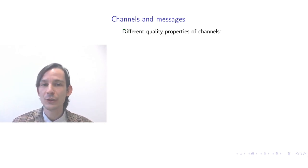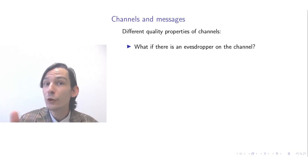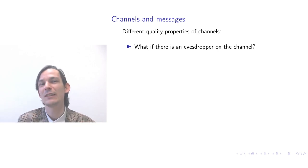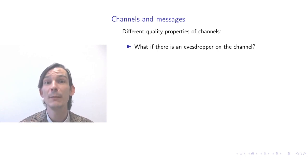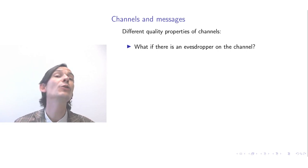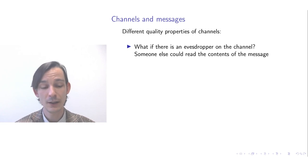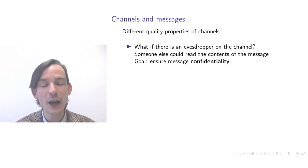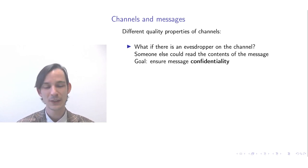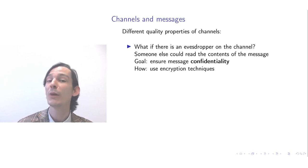There are different quality properties of channels. One property is confidentiality — what if an eavesdropper tries to snoop on the channel? On the internet, a man-in-the-middle could read the messages you communicate over the network. If your goal is to ensure message contents remain confidential, you need to apply techniques such as encryption to make sure messages are not readable by unintended parties.